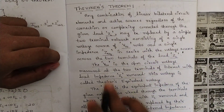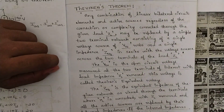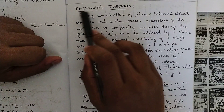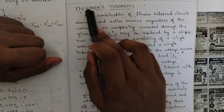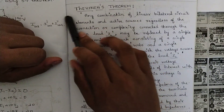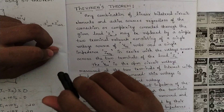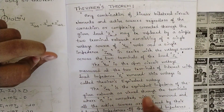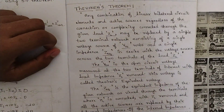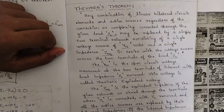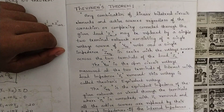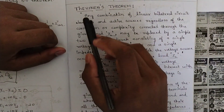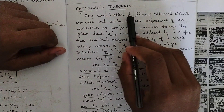We have one more important theorem — Thevenin's theorem. The spelling is a bit different but it is pronounced as 'Thevenin's theorem.' It is again a very tricky theorem, but very easy if you try to understand it. If you understand the theorem well, the problems should be very easy.